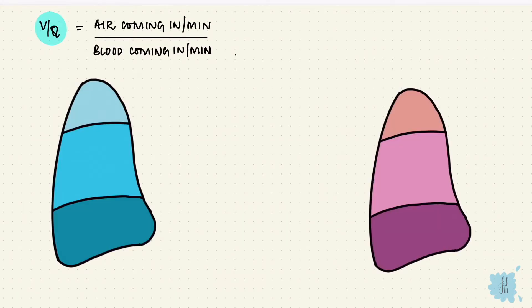The ventilation-perfusion ratio is the ratio of air coming in per minute to blood coming in per minute. Now normally this is not uniform while standing. Ventilation is low at the apex than at the base, and perfusion is much lower at the apex than at the base. So at the apex, with lower perfusion than ventilation, the ratio is higher. And at the base, with higher perfusion than ventilation, the ratio is lower.